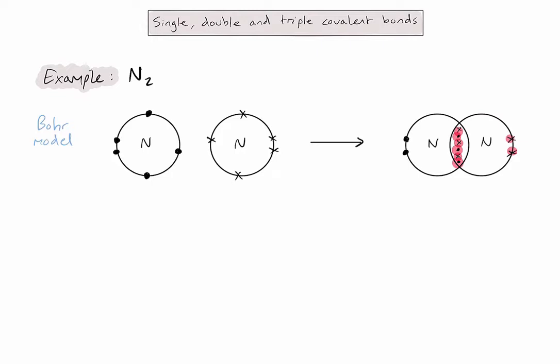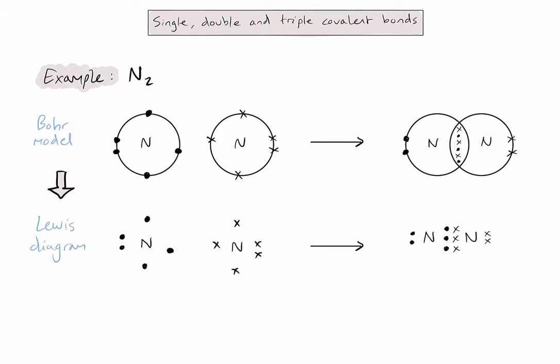So we've now managed to form a molecule which has achieved the octet rule for both atoms. Of course, we now need to represent this with Lewis diagrams, so let's do that. And in this case, because we're sharing three pairs of electrons between the atoms, we call this a triple bond.